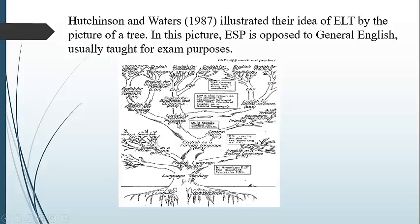ESP — that is to say, English for Specific Purposes — is broken down into three branches: English for Science and Technology, English for Business and Economy, and English for Social Sciences. Each of these subject areas is further divided into two branches: English for Academic Purposes and English for Occupational Purposes, as you can see in each of them.